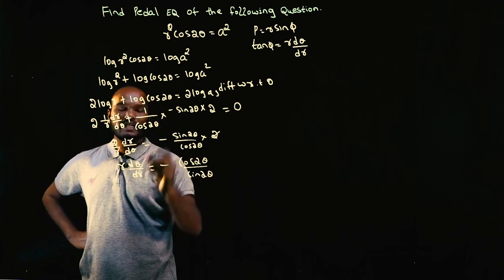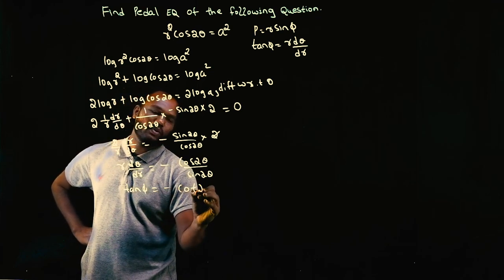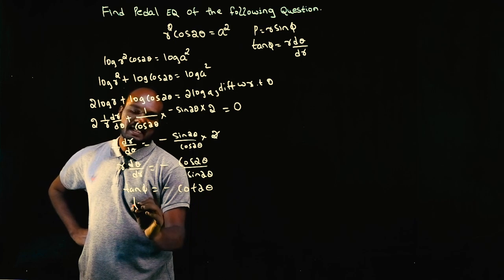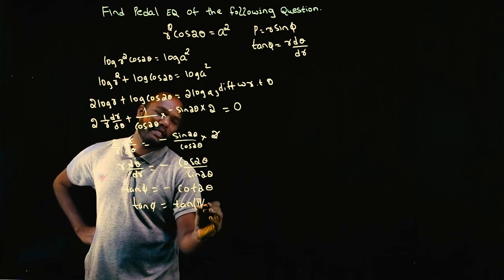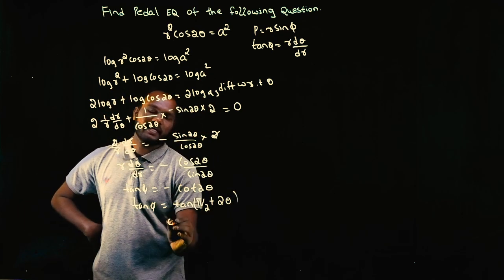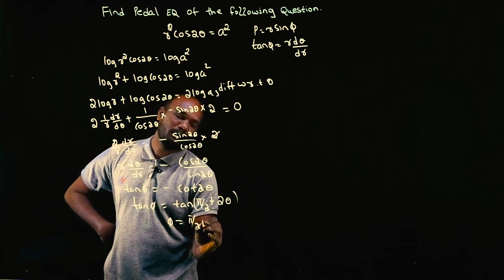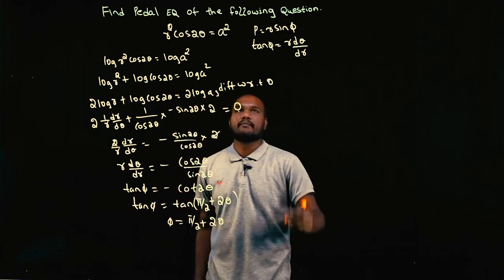So R times d theta by dr is what? Tan phi. So this is what? Minus cot 2 theta. So tan phi equals tan of pi by 2 plus 2 theta. Tan tan we can take it out. Phi equals pi by 2 plus 2 theta.